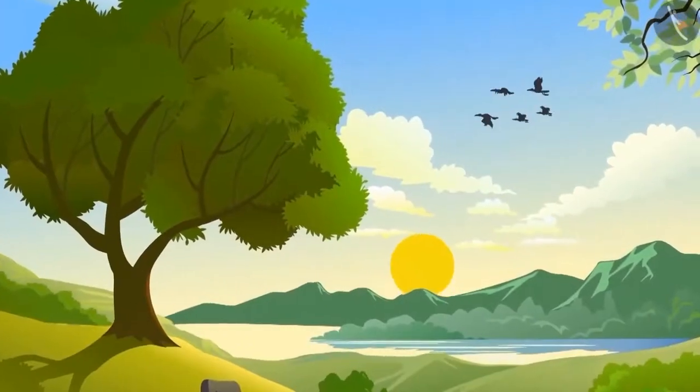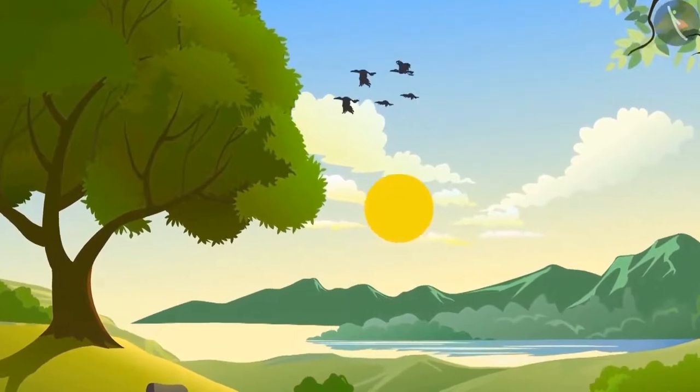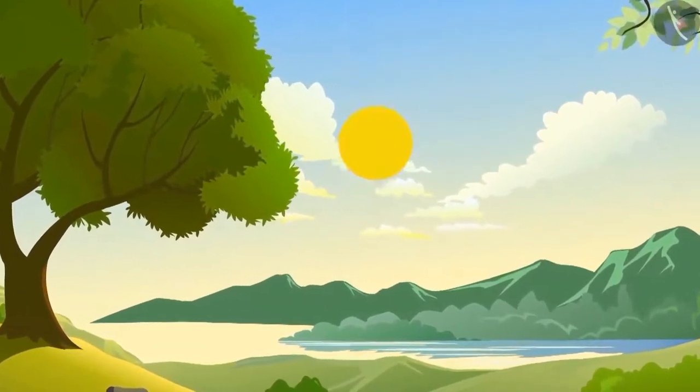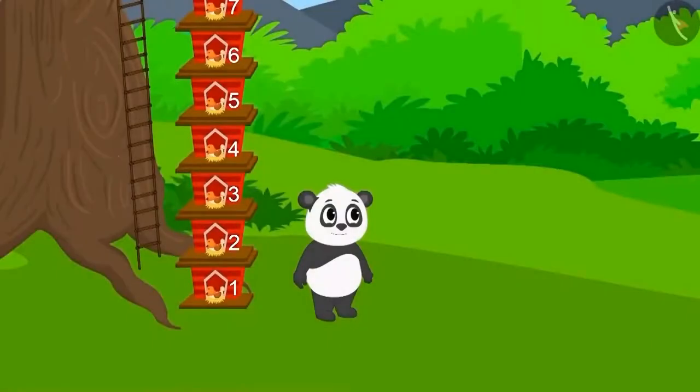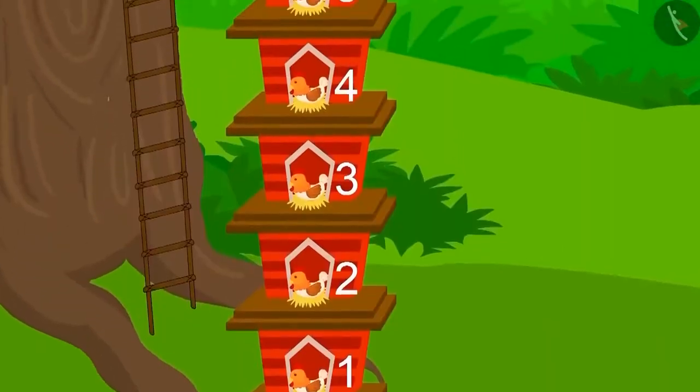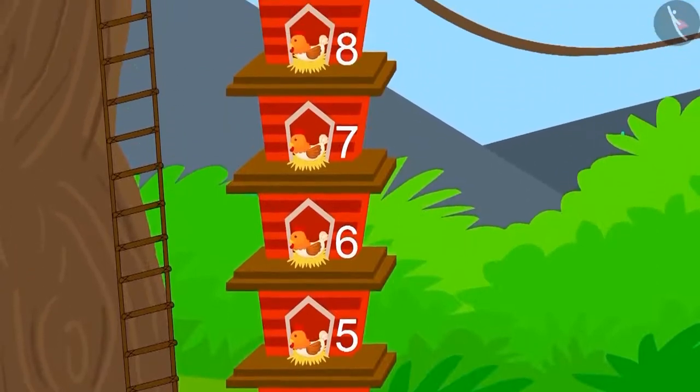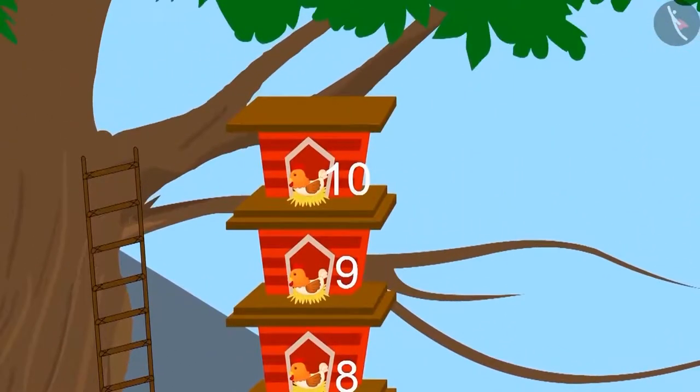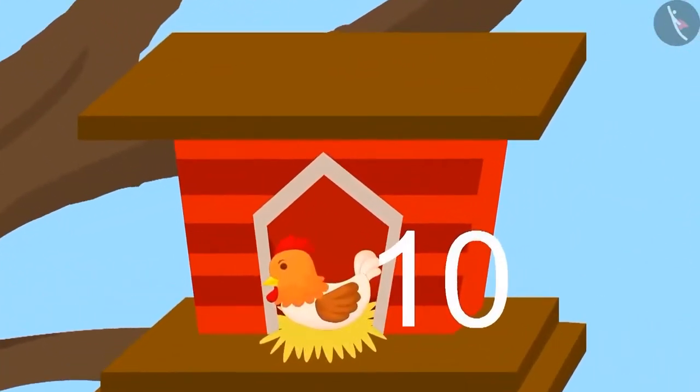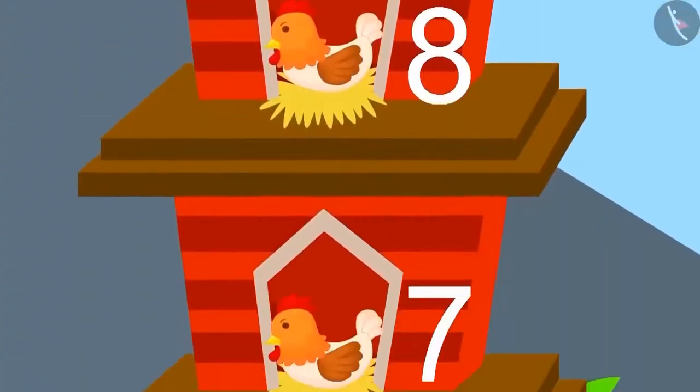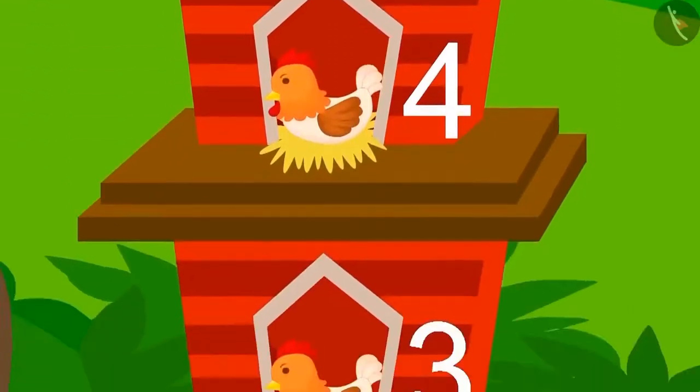Next day, the king came out to inspect the houses built by them. First, he went to see the house built by Golu. Golu had built a long house like this. In every row of the house built by Golu, there was one hen and there were ten such rows.